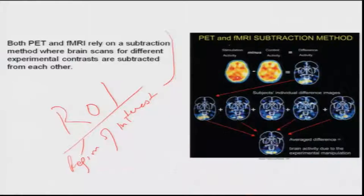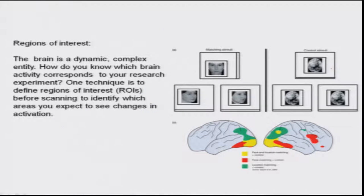Both PET and fMRI rely on what is called the subtraction method. There is a certain activity going on; you increase the demand and that increases blood flow, but you have to separate that from the baseline activity. So you subtract that imagery from the baseline — stimulation activity minus control activity gives you difference activity.